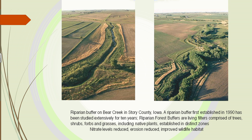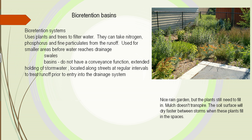We have bioretention basins — we use plants and trees to filter the water. They take nitrogen and phosphorus and filter particulates from the runoff. Here's a rain garden in its early stage — it has mulch on it, and as rain comes into this area it allows water to be absorbed into the earth, and the plants then take away some of the pollutants.